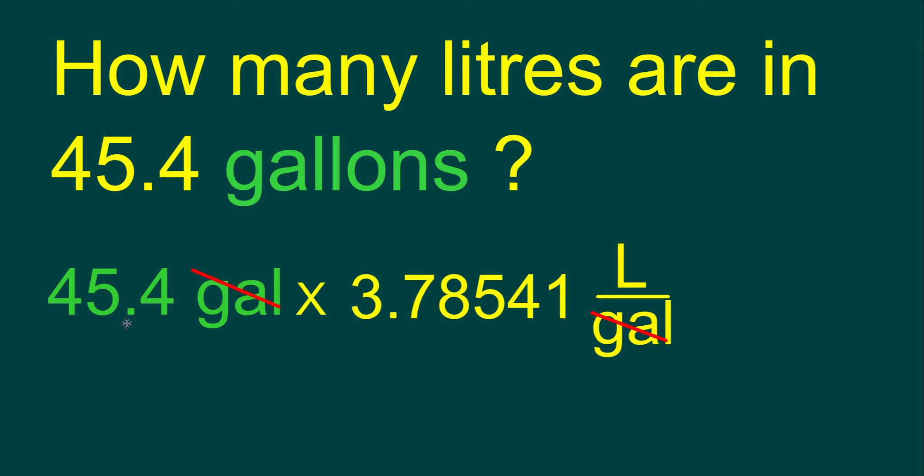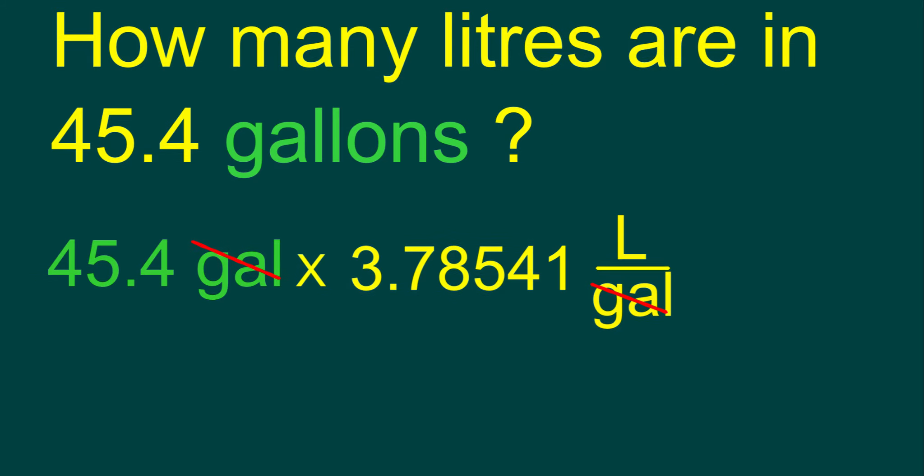So, those will cancel off. And now, we're just going to be multiplying 45.4 times this 3.78541, which gives us 171.8576, and the unit would be liters. So, that means in 45.4 gallons, there are 171.8576 liters.